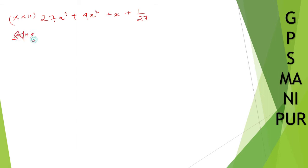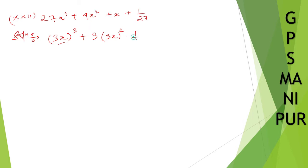Solution. 27x³ you can write down as (3x) whole cube. Plus 9x squared — so thrice a is 3x, giving thrice a squared. And b is 1/3, which we can write down as 1/3. Another term is thrice a squared b.